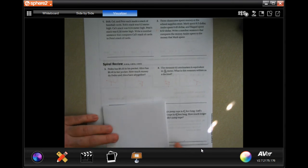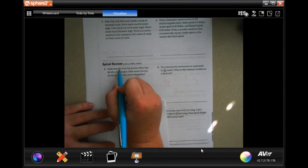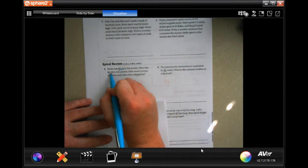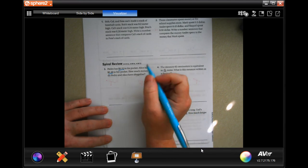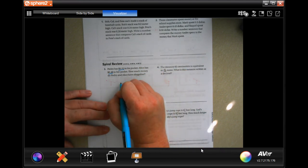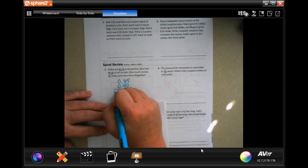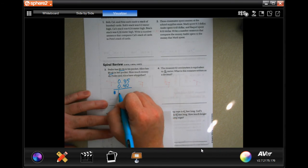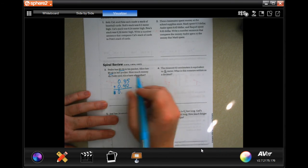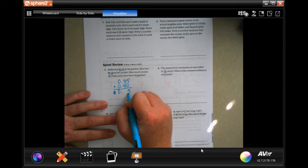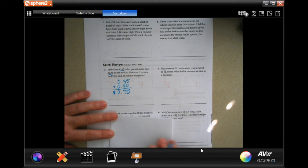Number three says, Pager has 35 cents in his pocket. Alice has 40 cents in her pocket. How much money do Pager and Alice have all together? Well, 0.35 and 0.40. Don't forget to put a dollar sign before it. 0, drop your decimal. 5 plus 0 is 5 and 3 plus 4 is 7. That's it.